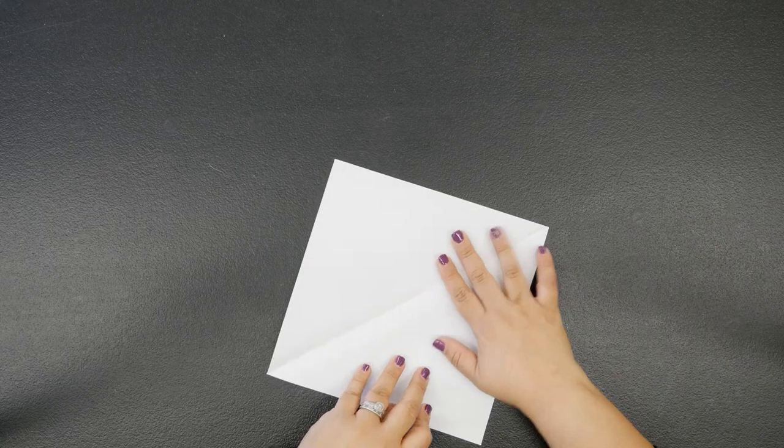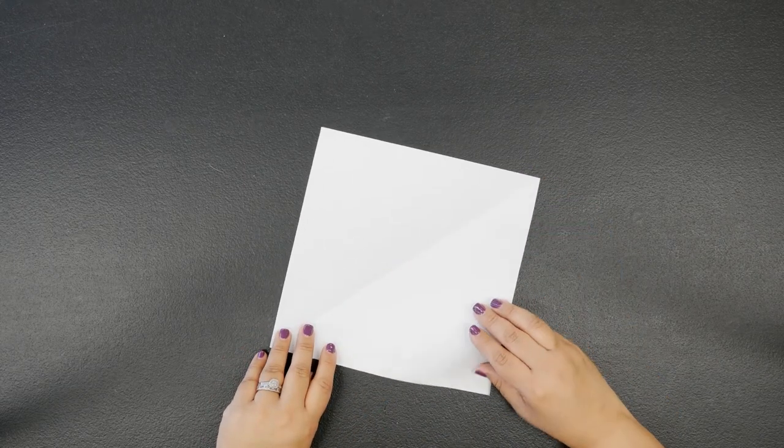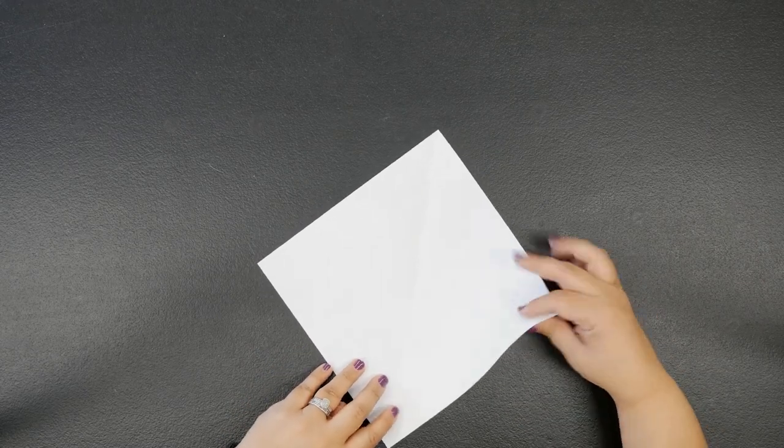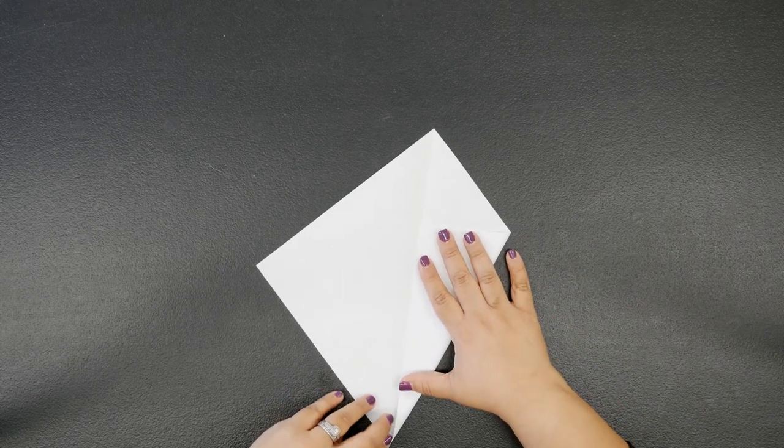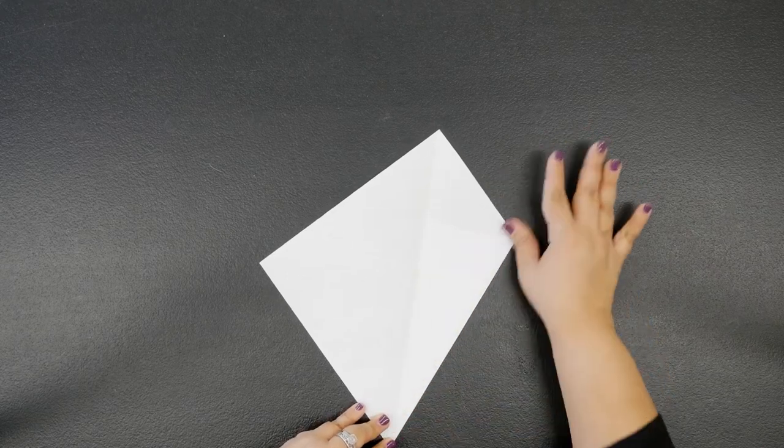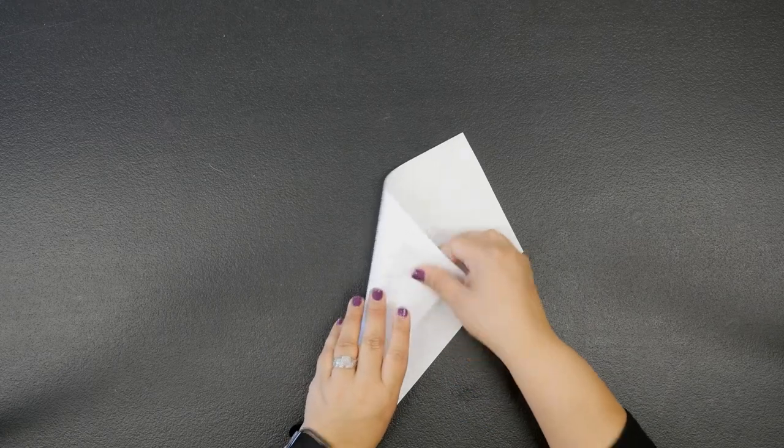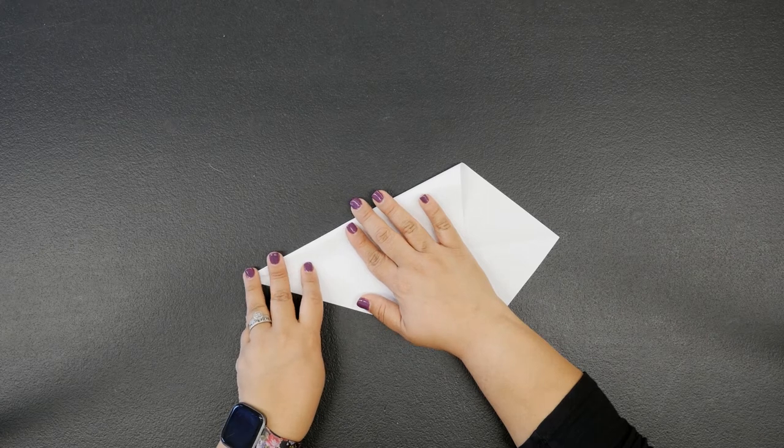Go ahead and open up your sheet of paper and now we're going to do a kite fold. Let me flip it this way and then we're going to bring this corner the right into that middle crease just like this, and then do the same thing to the left. Bring that over and crease it right through the middle there.